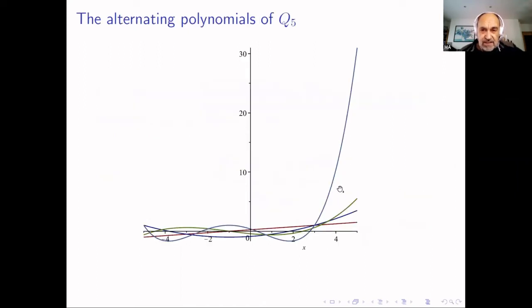Note that p_k takes k+1 alternating values at the mesh, exactly as the Chebyshev polynomials do in the whole interval. This is just a plot of the alternating polynomials for this graph — the highest degree polynomial and the others.